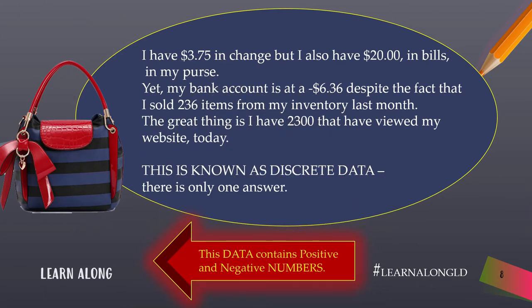Here's an example: I have $3.75 in change, but I also have $20 in bills in my purse. Yet my bank account is at a negative $6.36, despite the fact that I sold 236 items from my inventory last month. The great thing is I have 2,300 people who viewed my website today. This is known as discrete data — there is only one answer, and this data contains positive and negative numbers.